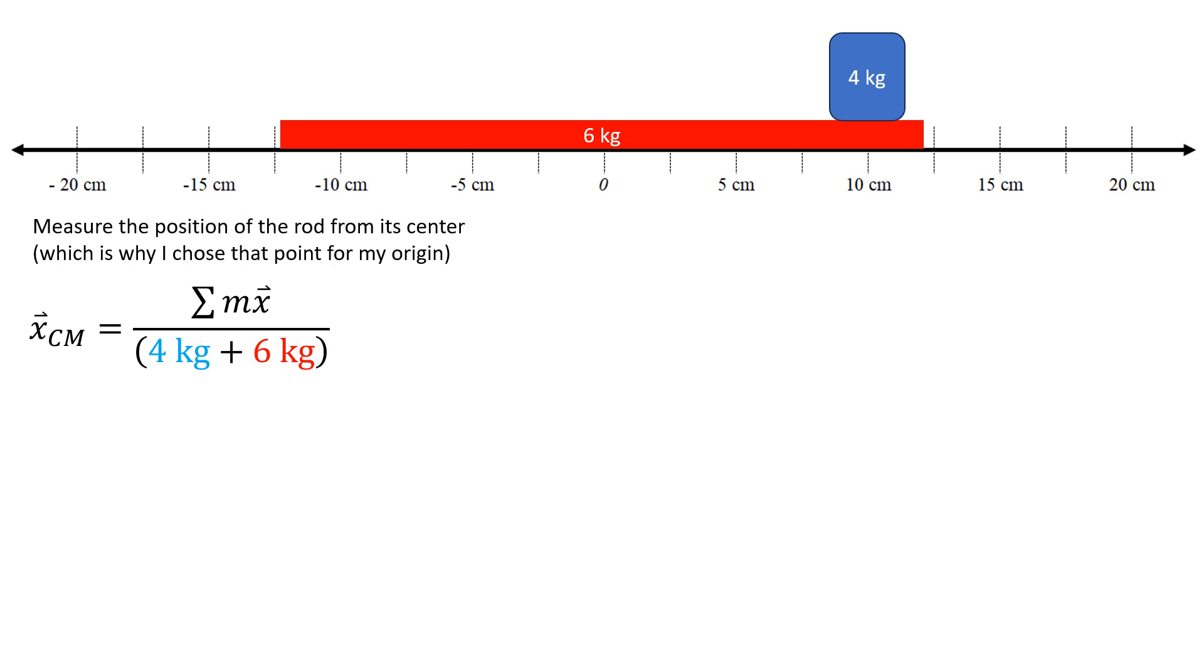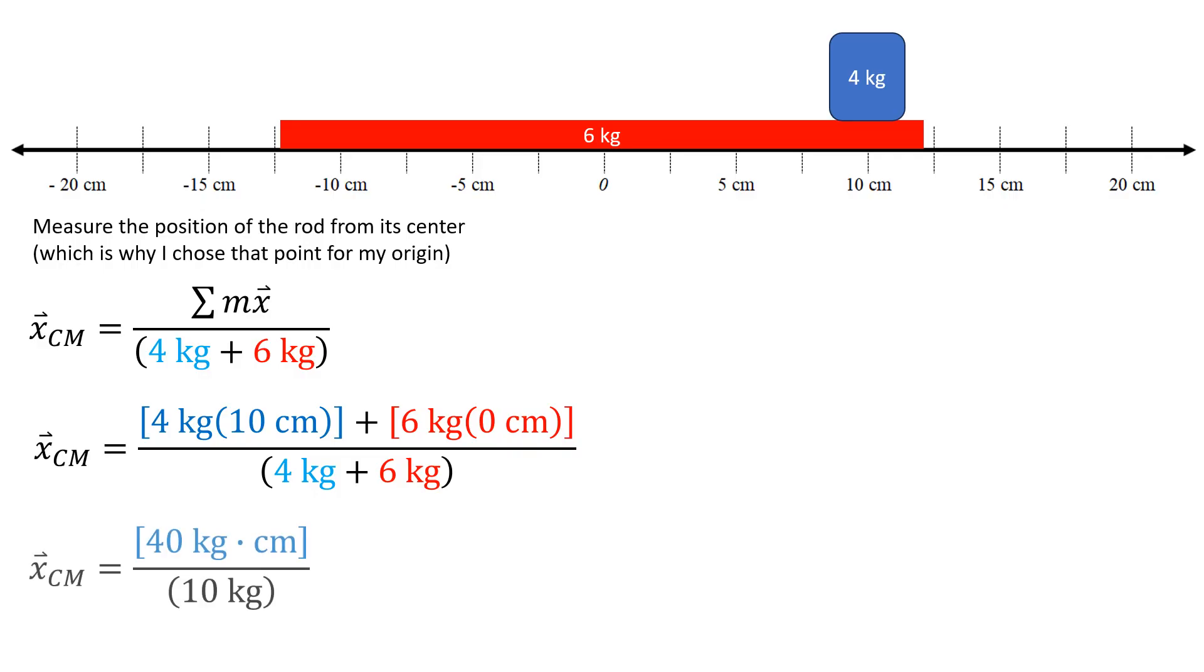Substituting into the center mass equation, doing the masses first on the denominator, that's going to give me 10 total kilograms. The blue thing, the four kilogram object, is at a position of 10 centimeters, and the rod, the red thing, is at a position of zero centimeters. The mass on the right side and the mass on the left side balance each other out. The center mass of just the rod is at zero, so that term becomes zero. The blue term is 40 kilogram times centimeter. The mass of the rod does count in the denominator, which is why I recommend you do that first. Pulling the crank on the math handle, you get an x position for the center mass of about four centimeters.